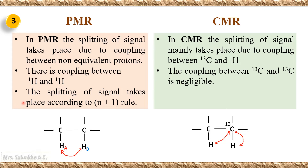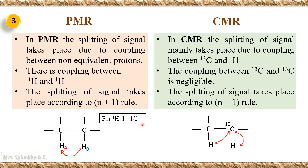In PMR, the splitting of signals takes place according to the N+1 rule. Since the spin quantum number of 1H is 1/2, the N+1 rule applies. In case of CMR, the splitting of signals also takes place according to the N+1 rule, as the spin quantum number of 13C is also 1/2. Due to the two types of coupling in CMR, the spectra of CMR is complicated in nature.